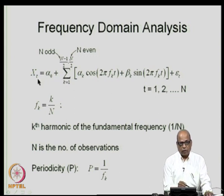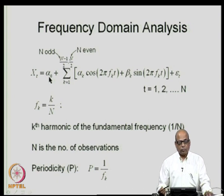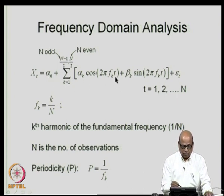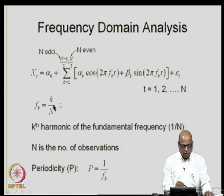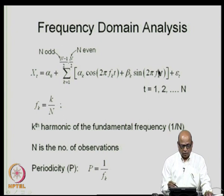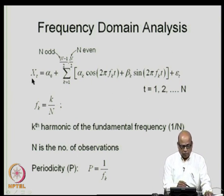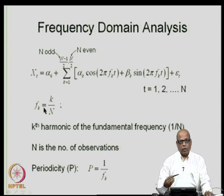In this expression, for a given k, f_k is the k-th harmonic of the fundamental frequency (1/n), so f_k = k/n. The time series is expressed as consisting of a sinusoidal component, a random component ε_t, and a constant α₀. The periodicity corresponding to frequency f_k is simply 1/f_k. The constant α₀ is estimated by the sample mean x̄.